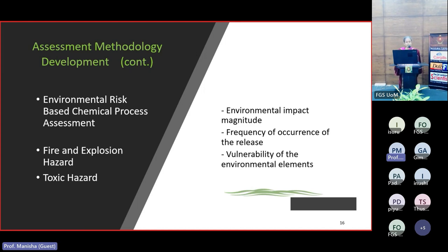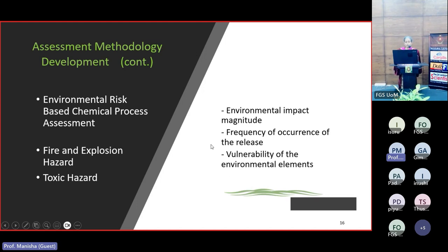The methodology being developed — now an ongoing research work — is the Chemical Process Route Assessment Methodology based on Environmental Risk. Here we consider hazards related to fire, explosion and toxic hazards. We consider environmental impact magnitude and the vulnerability of environmental elements together with the frequency of occurrence of the accidental release, giving us the environmental risk. We plan to continue this work considering dynamic environmental risk in chemical process route assessment.